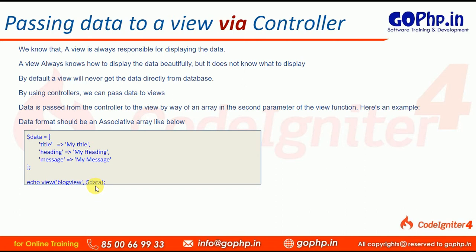Remember one thing: if you want to pass any data to a view, the data must be an associative array. You can see we have key-value pairs. This is the format we have to use. If we send this data variable to the view, we can access the data in the view file using title, heading, and message variables. These three are keys, and these keys act as variables in our view template.